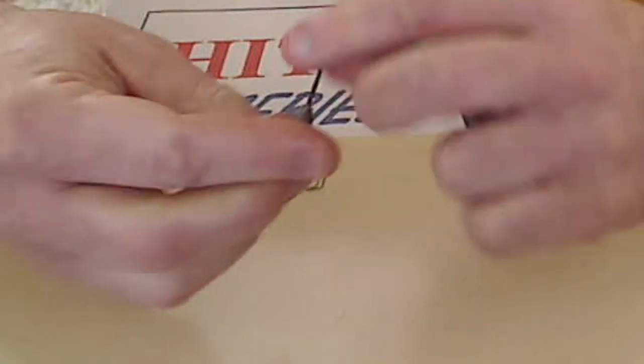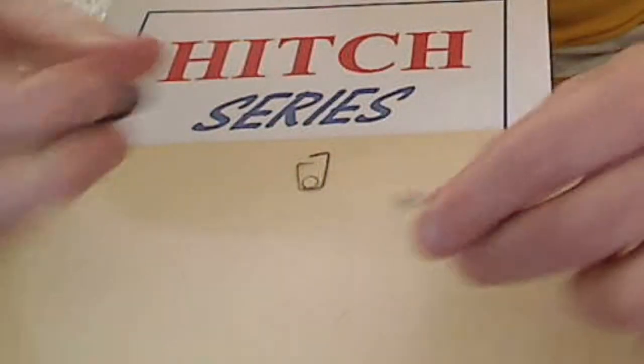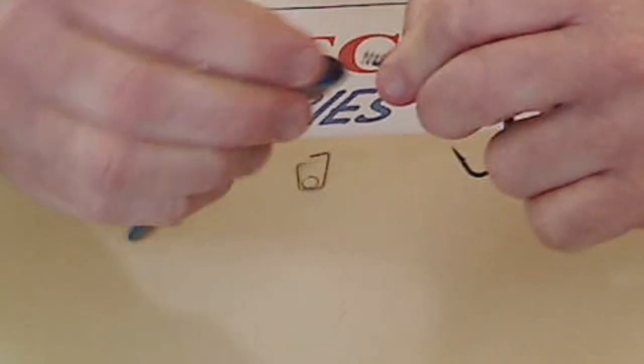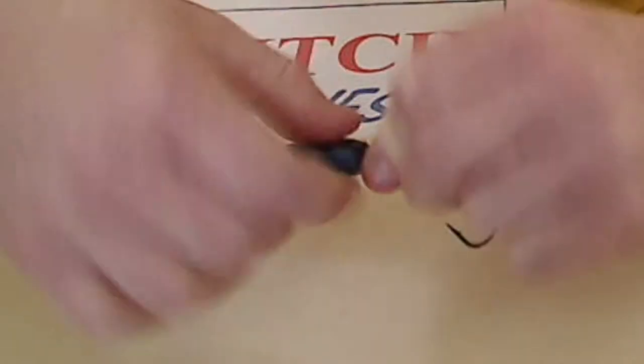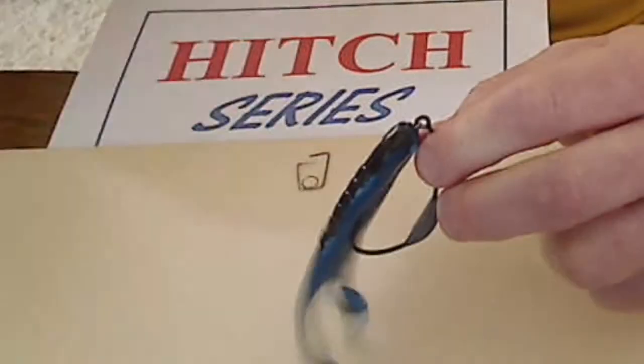So let me show you just how easy it is to fix this problem with the Hitch Series trailer hitch. Let's thread the same bait on. It's already torn up, but we'll use the same one. Start by putting it on the keeper just the same as you always would.